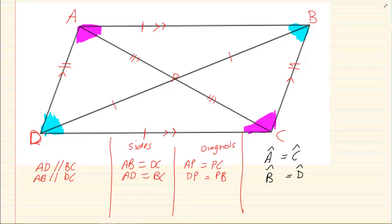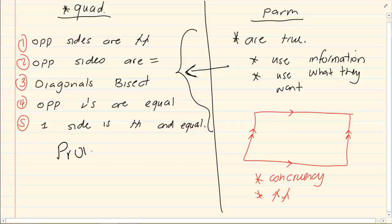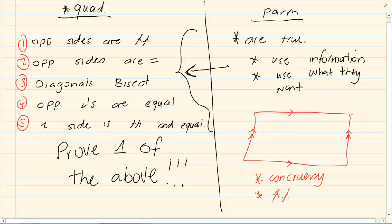If you know the properties of a parallelogram, you will be fine. These are the properties of a parallelogram. In order to prove that a quadrilateral is a parallelogram, you must prove one of the above. So if I give you a drawing and you can prove that the opposite sides are parallel, immediately you can tell me it's a parallelogram. If the opposite angles are equal, immediately you can say it's a parallelogram. However, if I give you a parallelogram with limited information and ask you to prove another quality, you have to go and use your congruency or your parallel lines to prove that that quality is true. Thank you for watching.